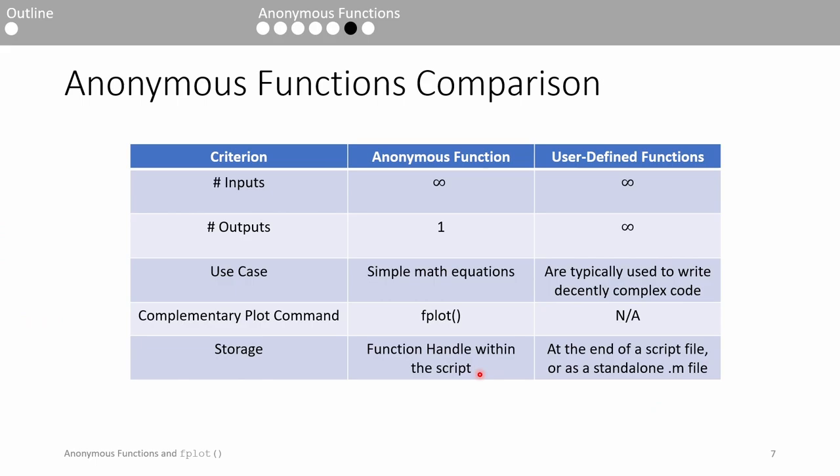Although I touched on this earlier, I'd like to have an entire slide dedicated to the difference between anonymous functions and user-defined functions. Both can have as many inputs as you want, but anonymous functions are limited to only one output. Anonymous functions are commonly used for simple math expressions, so they're less versatile than user-defined functions. However, anonymous functions do have a complementary plotting function, fplot. There isn't really an equivalent of fplot for user-defined functions.